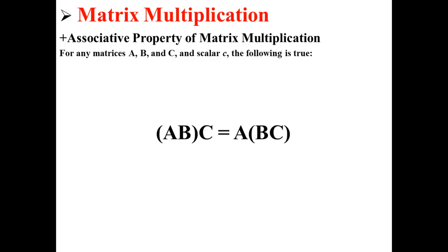Let's start with the associative property of matrix multiplication. For any matrices A, B, and C, and any scalar c, the following is true: A times B, in parentheses, times C is equal to A times B times C, in parentheses.